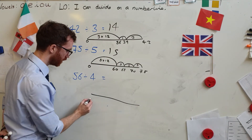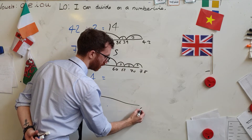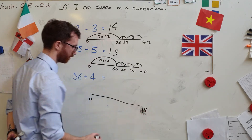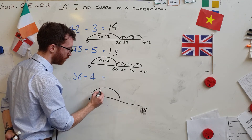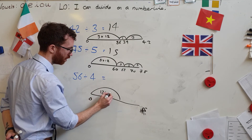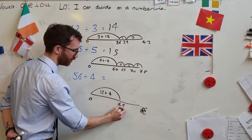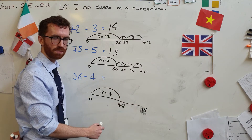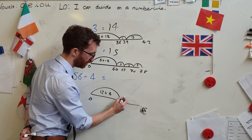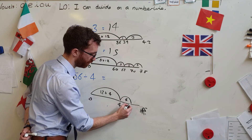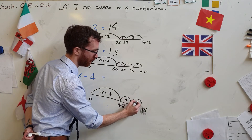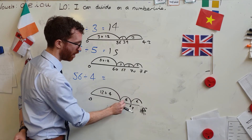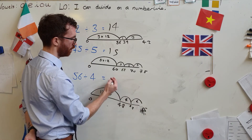Last one — zero to 56, working out how many fours. I know that 12 lots of four equals 48. Another four equals 52, another four equals 56. How many fours are there altogether? Twelve, thirteen, fourteen. 56 divided by four equals 14.